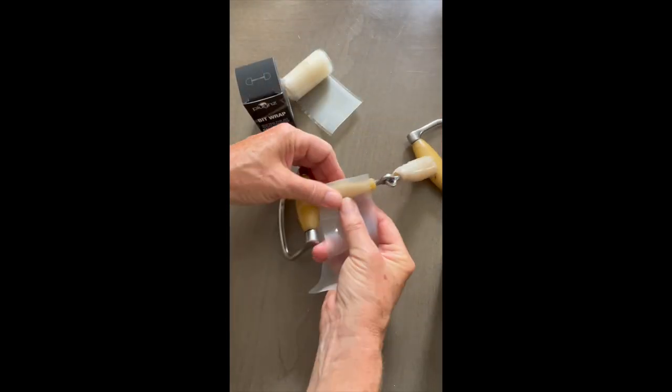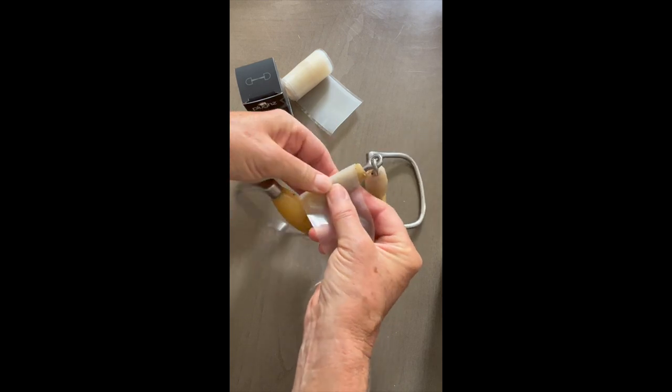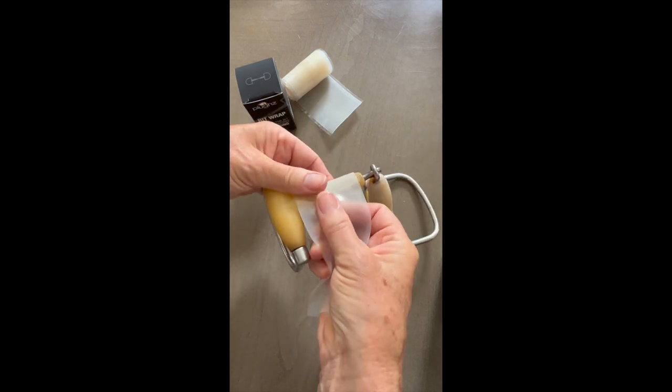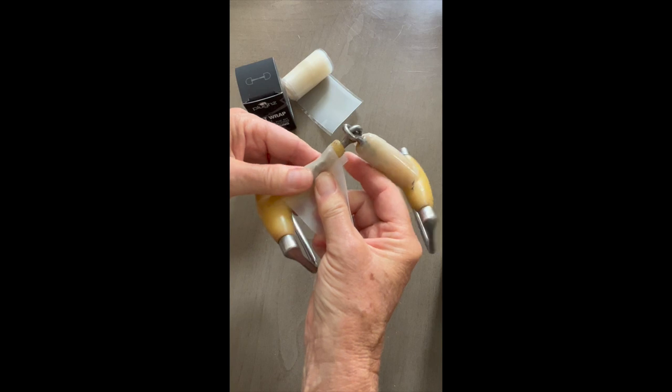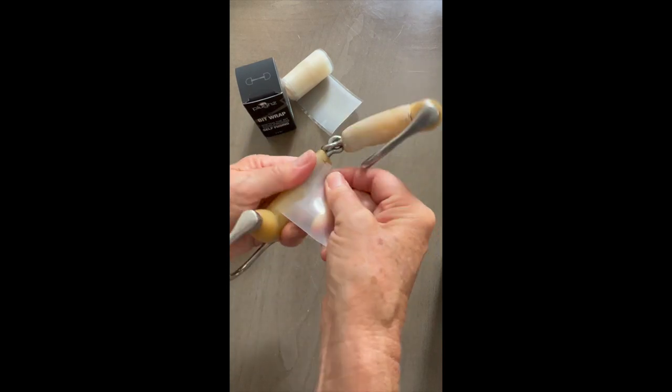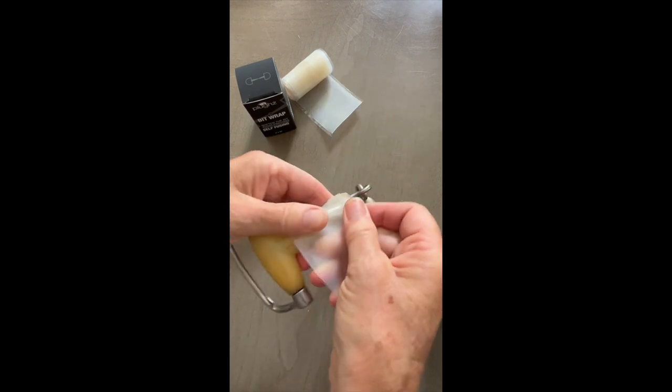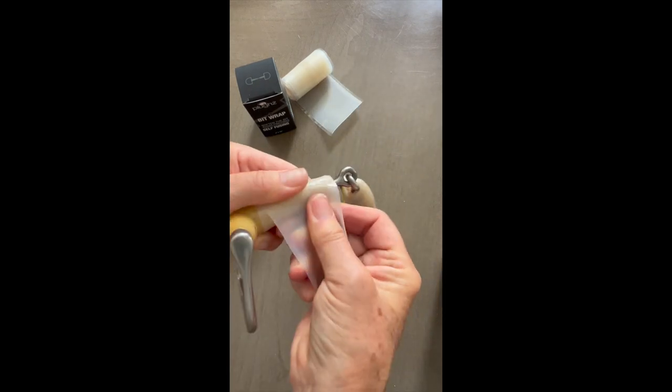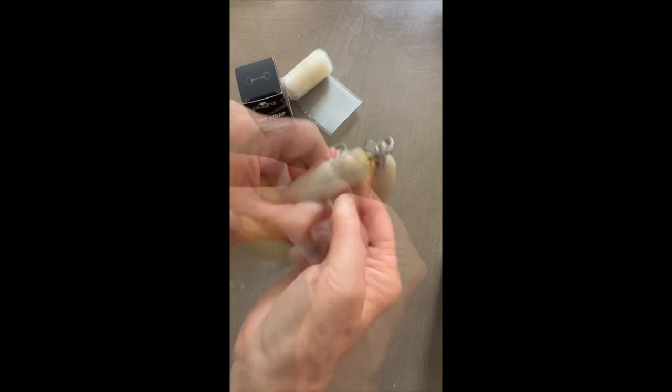Now go ahead and cut another piece and remove the backing. Start wrapping and be sure to use lots of pressure as you wrap the bit. Again, once you're finished, use lots of pressure to seal this tape.